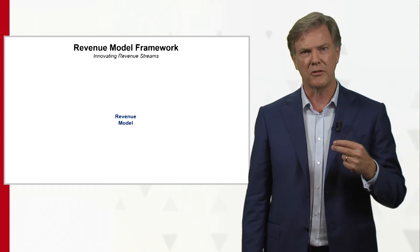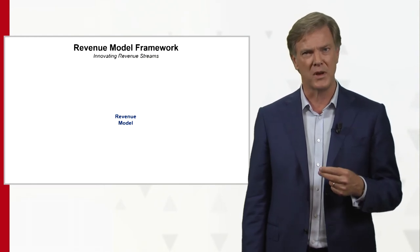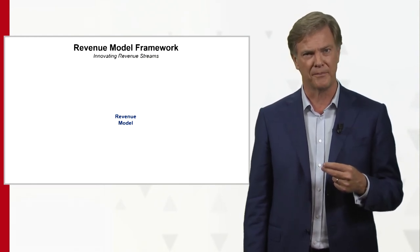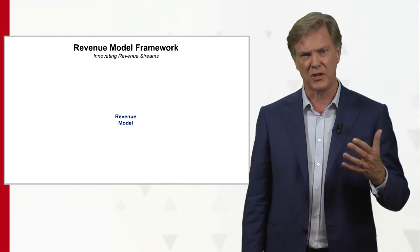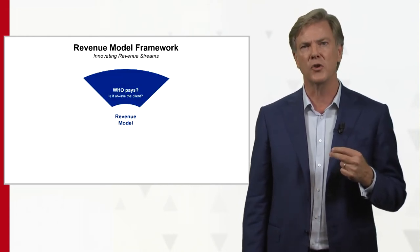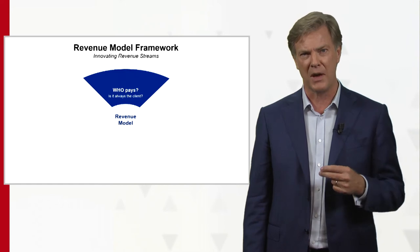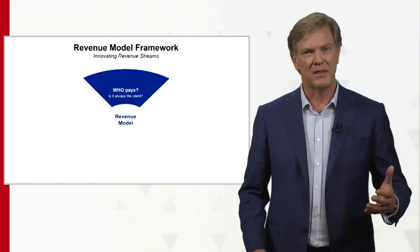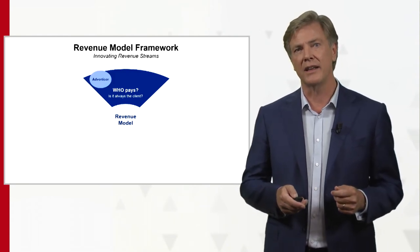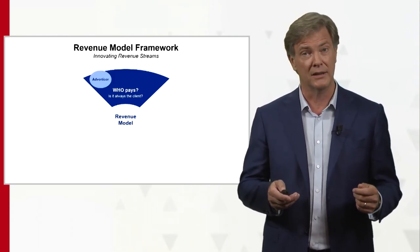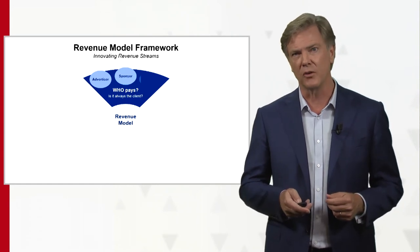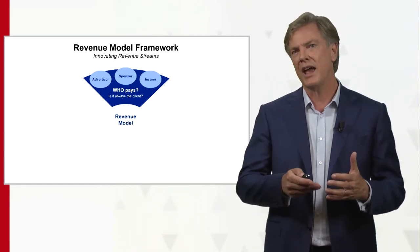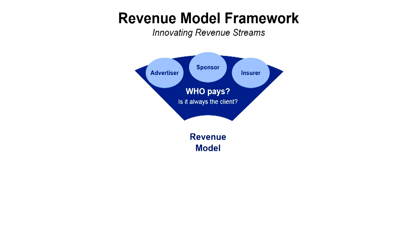Let's go to the model to think through some innovative ways in which we can generate revenue streams. There are five parts to this framework, and it starts with the whole question of who is actually the person doing the paying. Is it always the client? Well, very often it is, but this is something that we can play around with. Maybe we can find an advertiser who's willing to pay, or maybe a sponsor or an insurance company, or is there anybody else who could actually do the paying? This is one of the dimensions along which we can vary our revenue model.